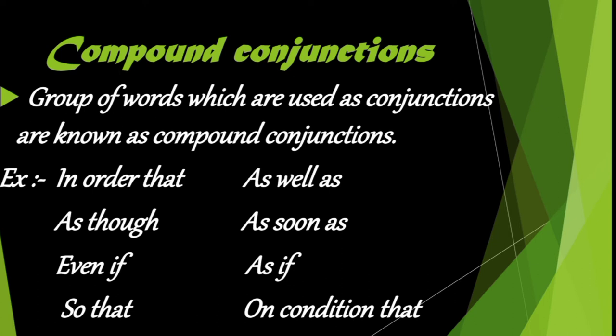The second kind is compound conjunctions. A group of words which are used as conjunctions are known as compound conjunctions. Examples are: in order that, as well as, as though, as soon as, even if, as if, so that, and on condition that.